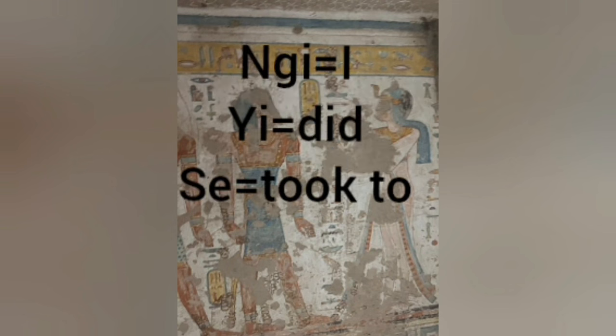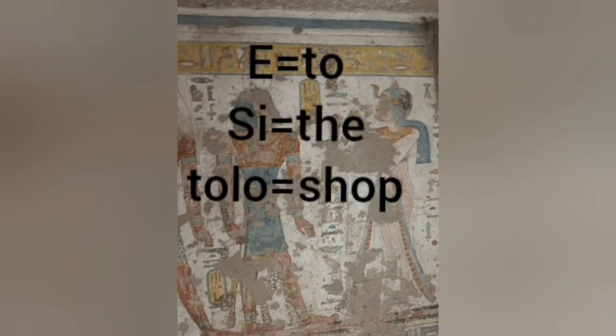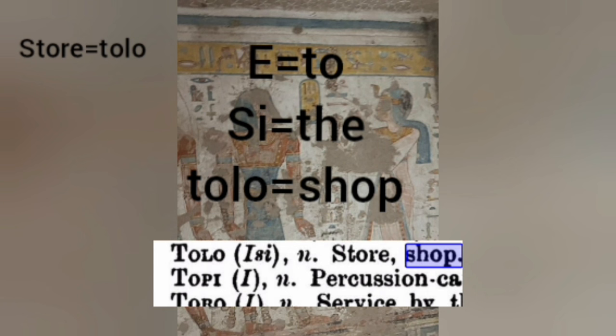'Gi' means 'I,' 'Yi' means 'taken,' and 'Se' means 'to' — so together: 'I have taken it to.' Then 'Esi Tono': 'Tono' means 'shop,' which is borrowed from Dutch, and 'Esi' means 'to the.' The 'E' is a prefix meaning 'to,' 'Si' means 'the,' and 'Tono' means 'shop.'